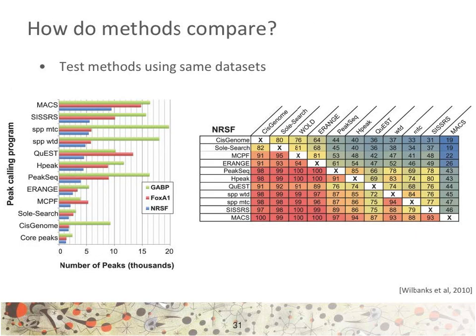As with every sequencing data analysis step, multiple tools exist to perform peak calling. As you can see in the figure above, different tools have very different sensitivity and identify on the same dataset a very variable number of peaks. On the right, the agreement between tools is displayed for one of the datasets. It is reassuring that tools have good agreement, but surprising that they vary so much in the number of identified peaks. Is it that MACS is too lenient and reports noise, or that CisGenome is too stringent and reports only high-scoring peaks? Or can we decide on the tool to use?